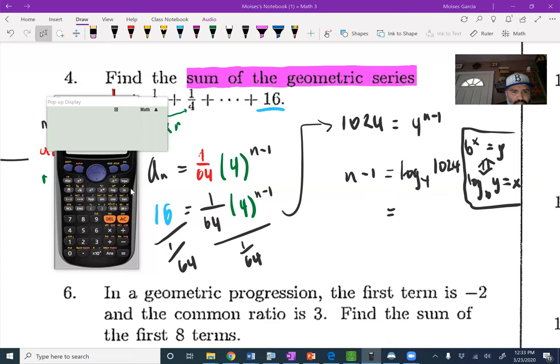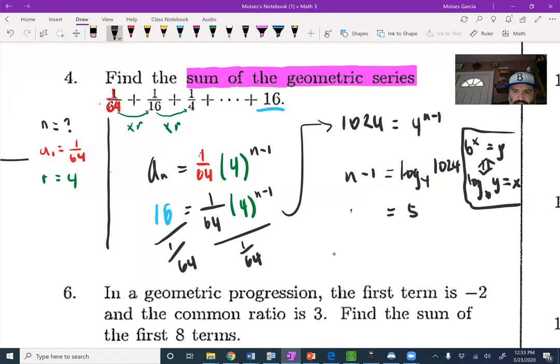So log base 4 of 1024, we get 5. So this is 5, and n minus 1 equals 5. I'm adding 1 on each side to get my value for n here is 6.